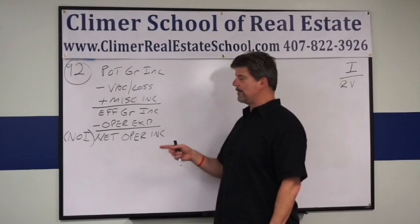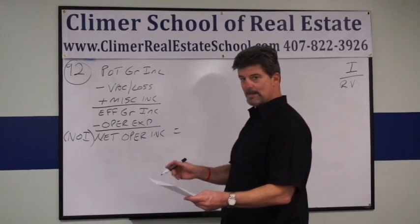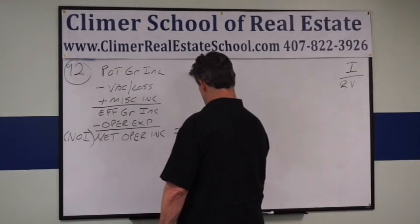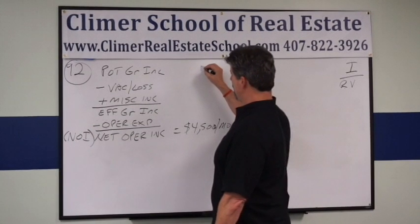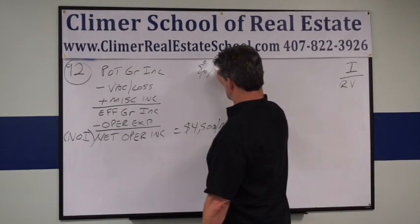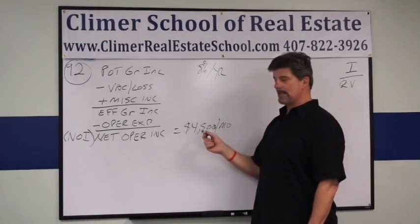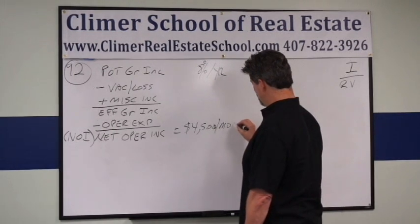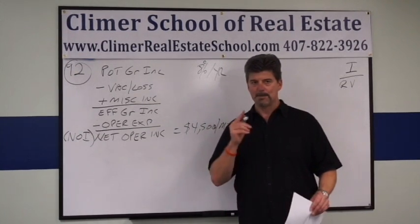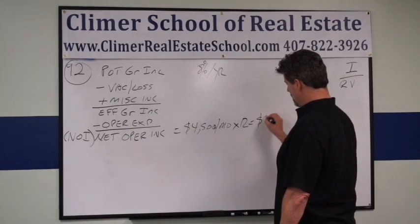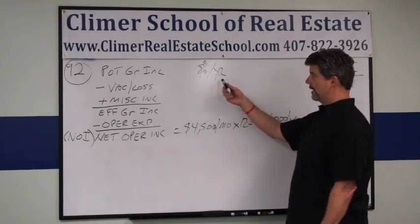Trick number one: they gave you monthly net income. The monthly net income according to the problem is $4,500. But you want annual because you have an 8% per year annual return — you have to keep your units the same: yearly and yearly. So we multiply by 12. $4,500 per month times 12 months per year equals $54,000 per year. Now our units match.